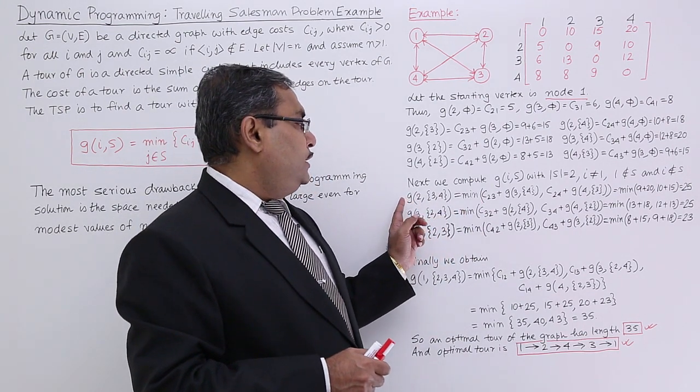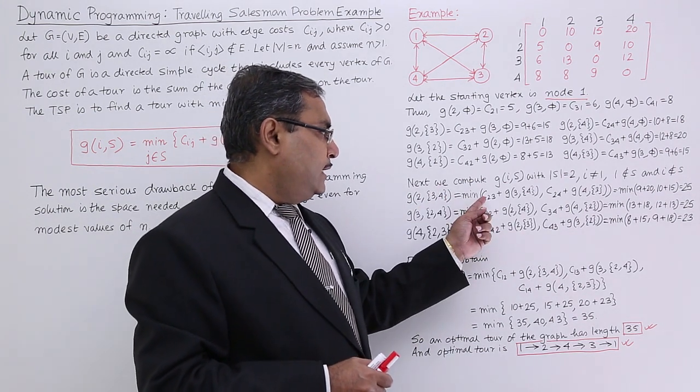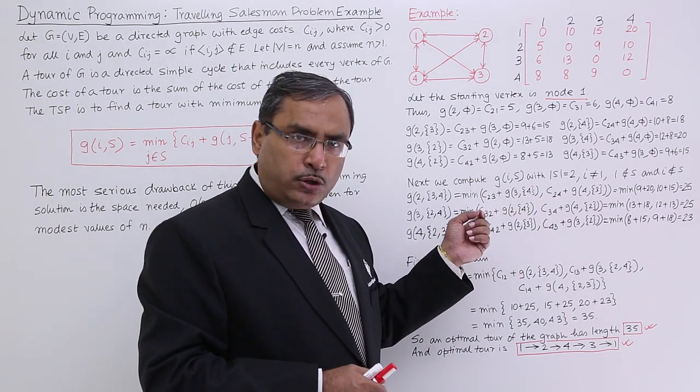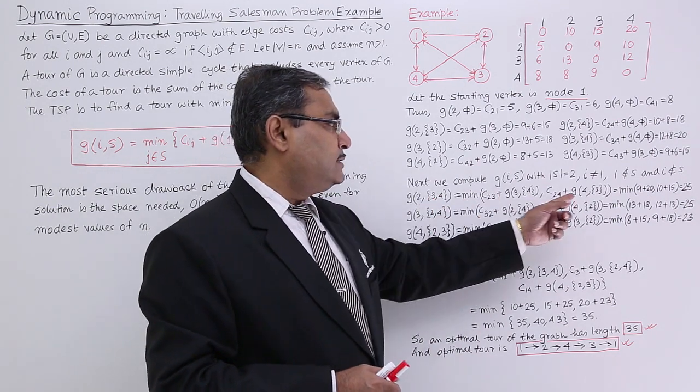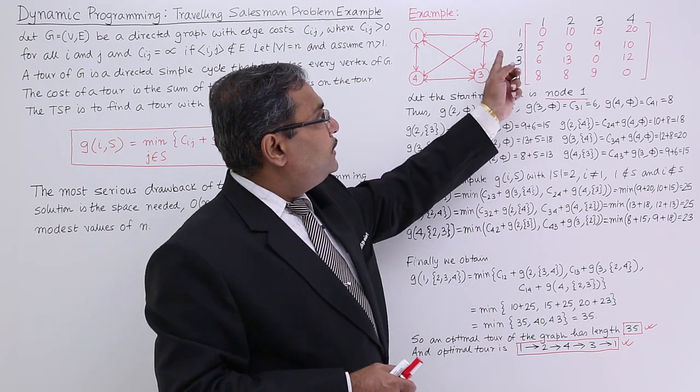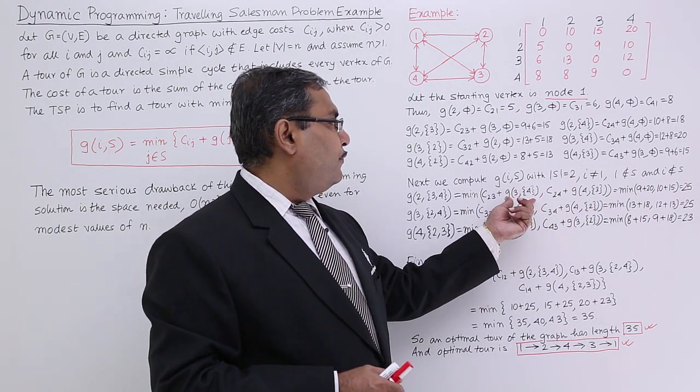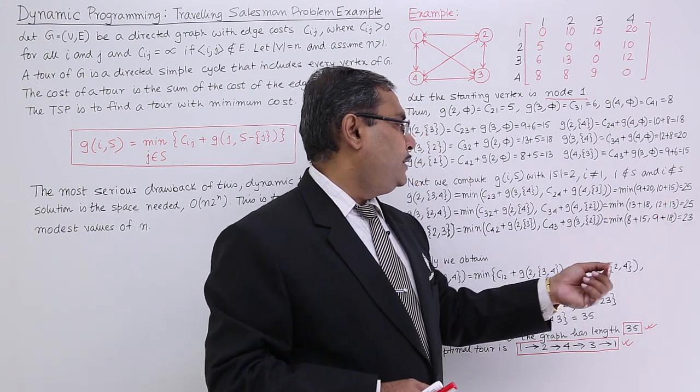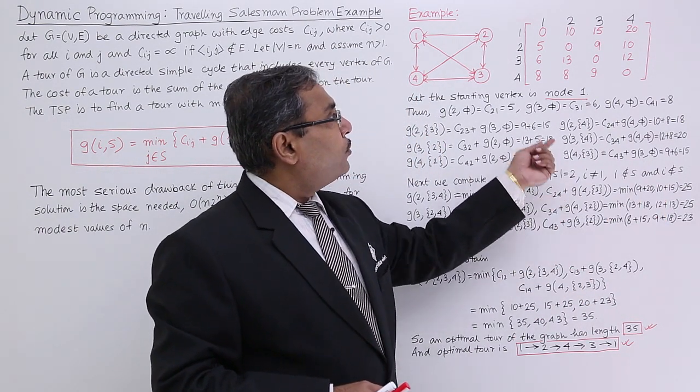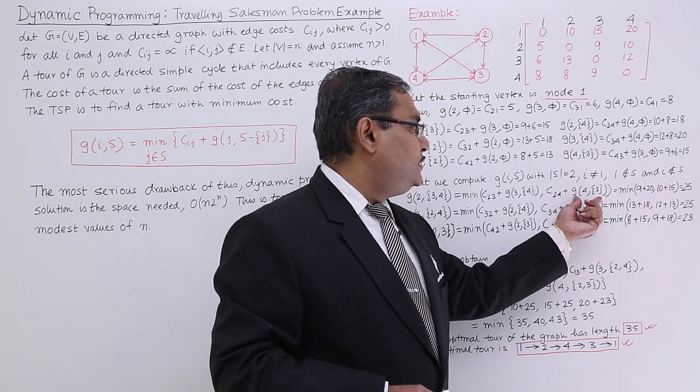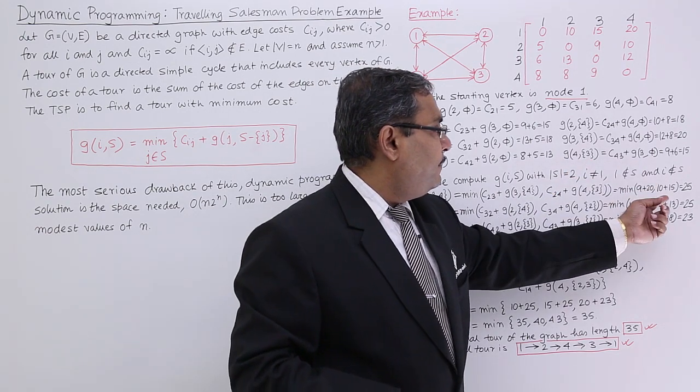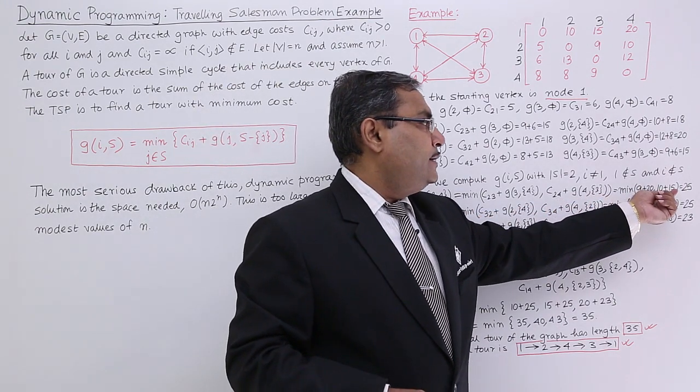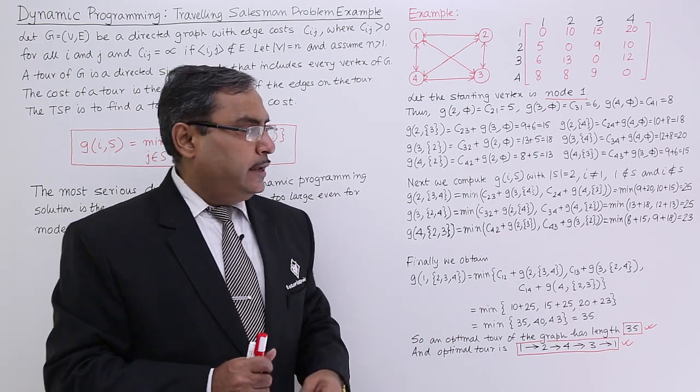G(2,{3,4}) can be of 2 types, can be of 2 solutions. One is C23 and then G(3,{4}). Otherwise, C24 from node number 2 I shall go to node number 4, so remaining node will remain as 3. C23 is equal to 9, and G(3,{4}) I can get it from the previous iteration recursion. So 9 plus 20. Now, C24 means it is 10 and now we are having G(4,{3}). G(4,{3}) means I am getting 15. So that is now minimum of them. Here the sum is 29, here the sum is 25. So I shall be taking 25. In this way, I did the rest.